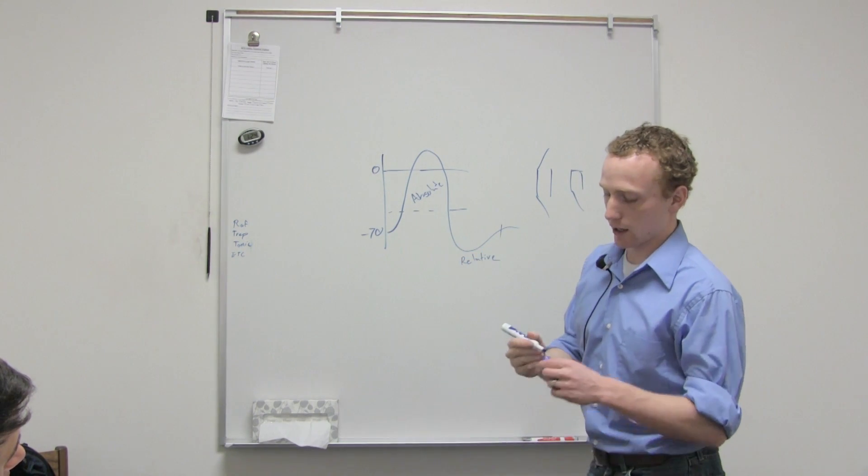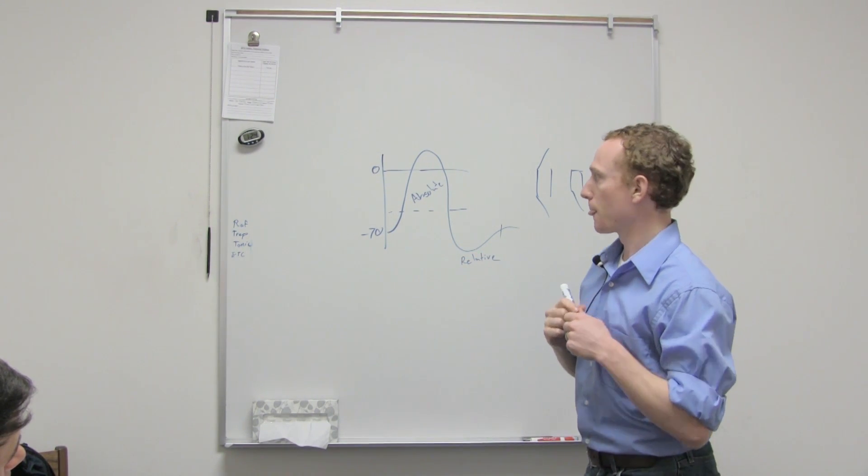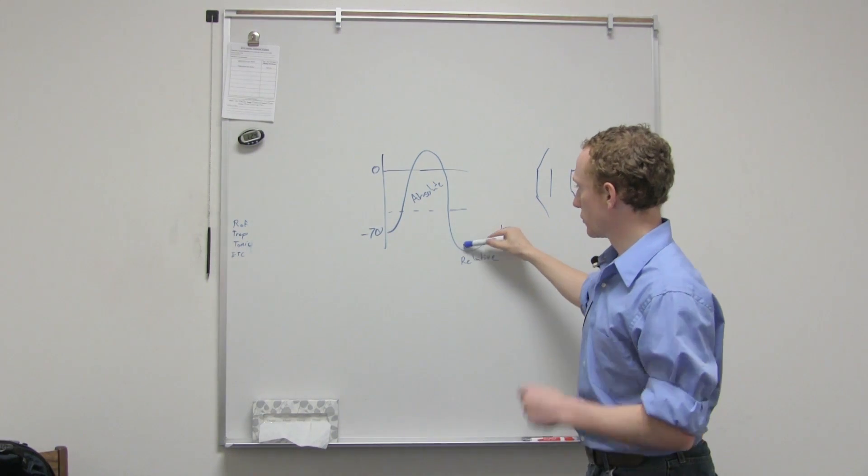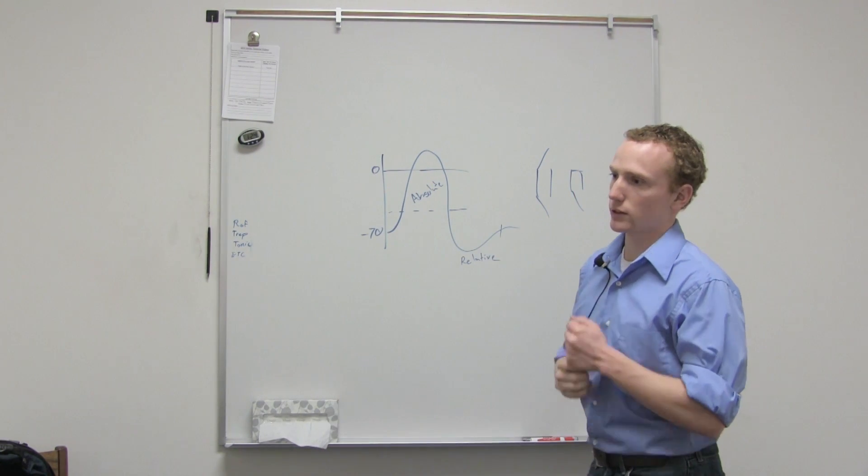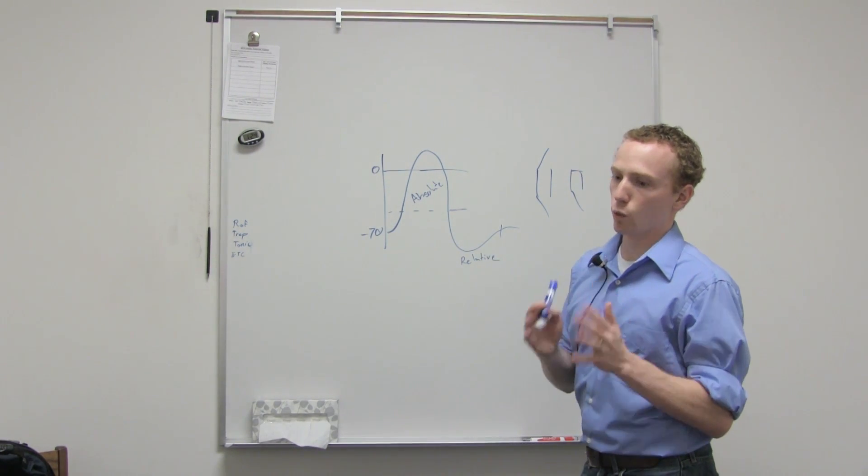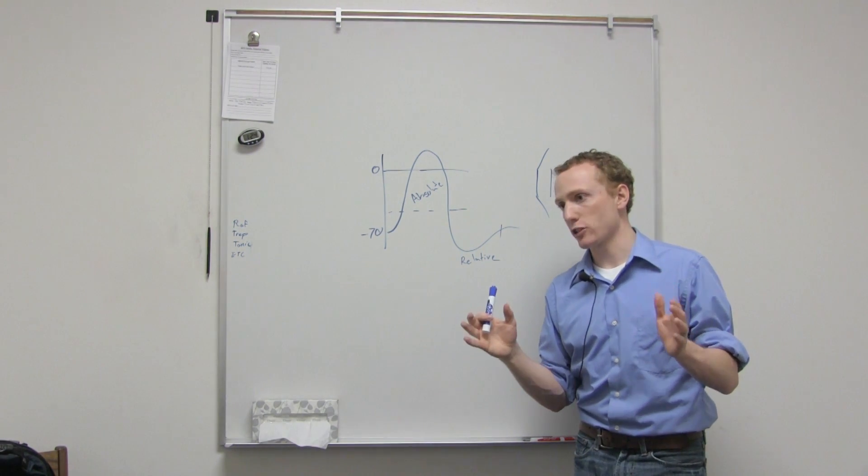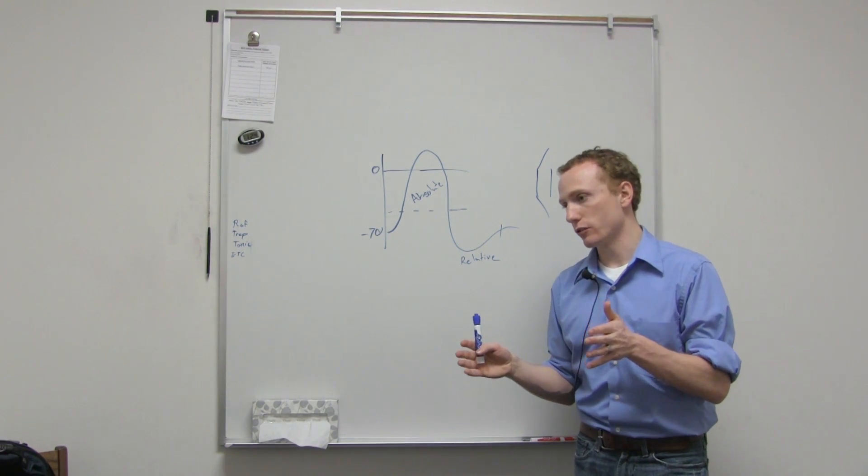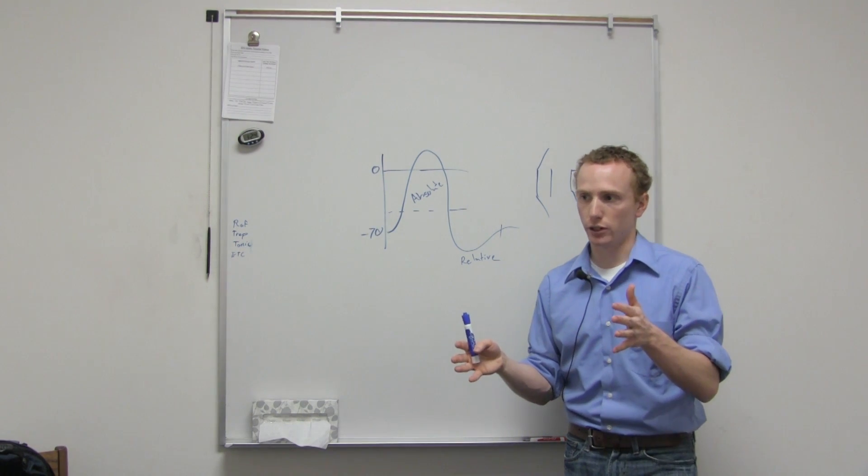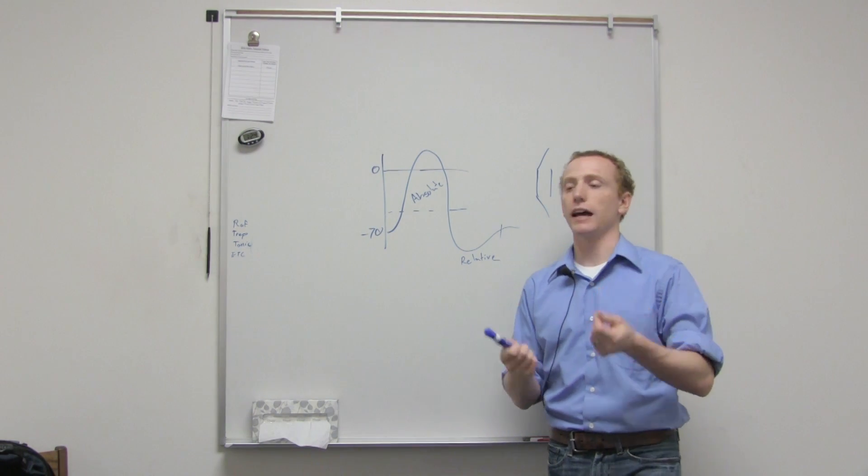And so it takes a higher frequency of signals to get this to go up. So basically, during the absolute refractory period, we can't have another action potential. During the relative refractory period, we typically don't have one. Possible, yes, but not as likely.